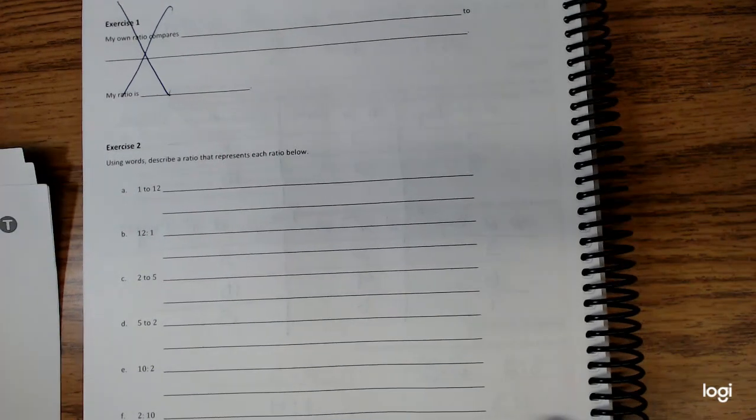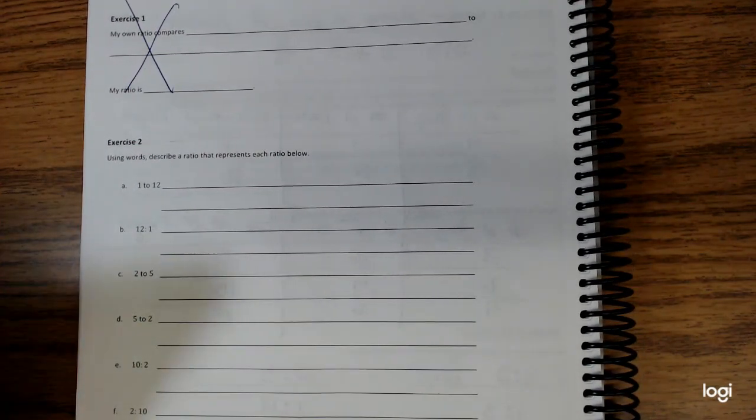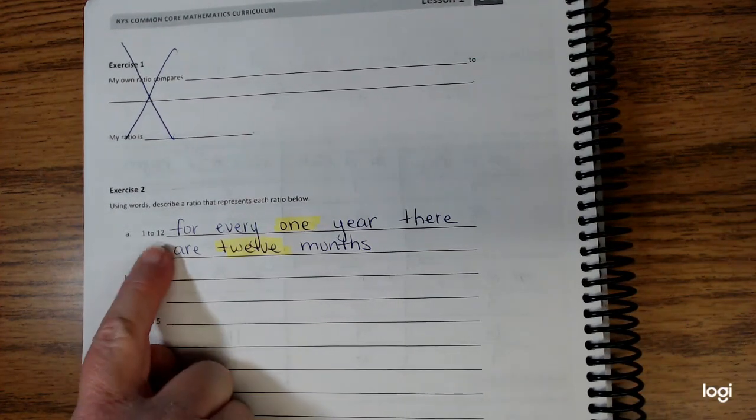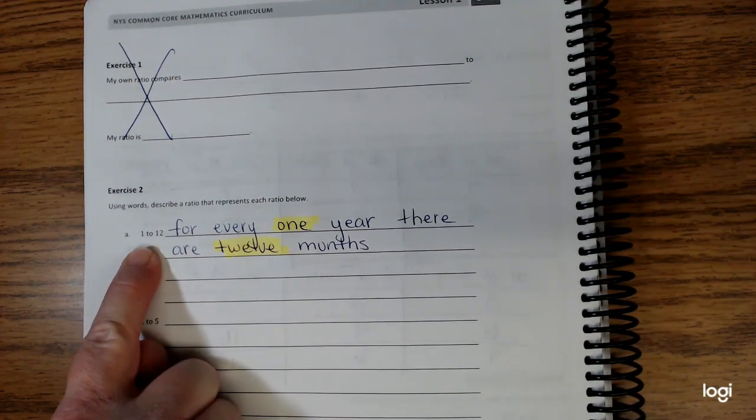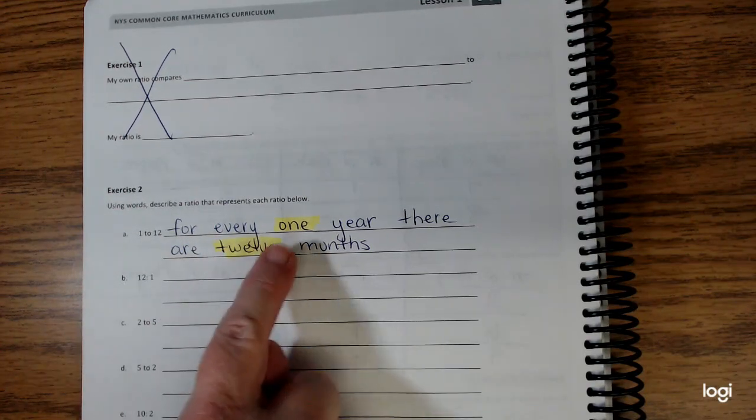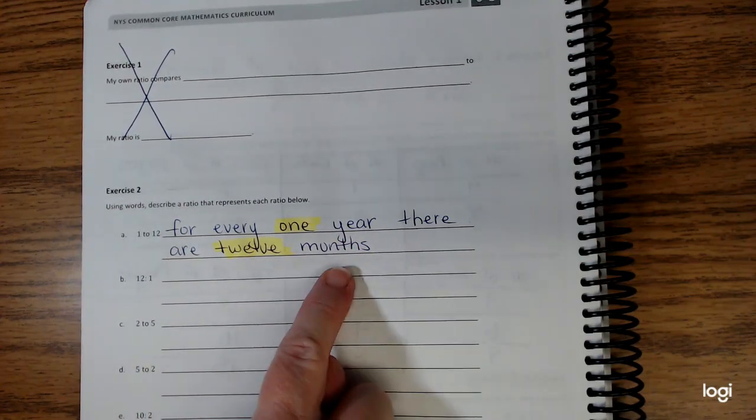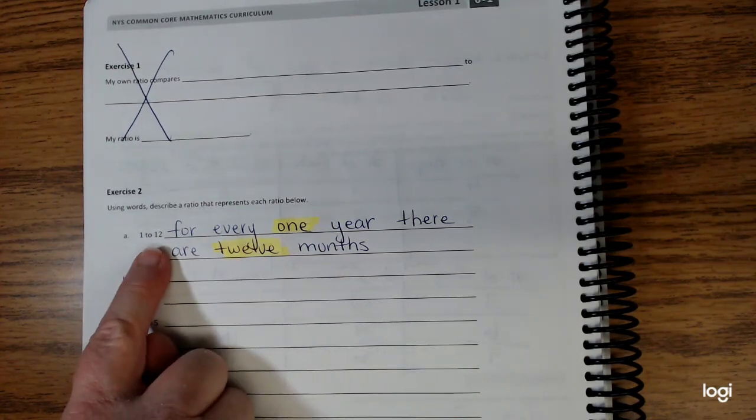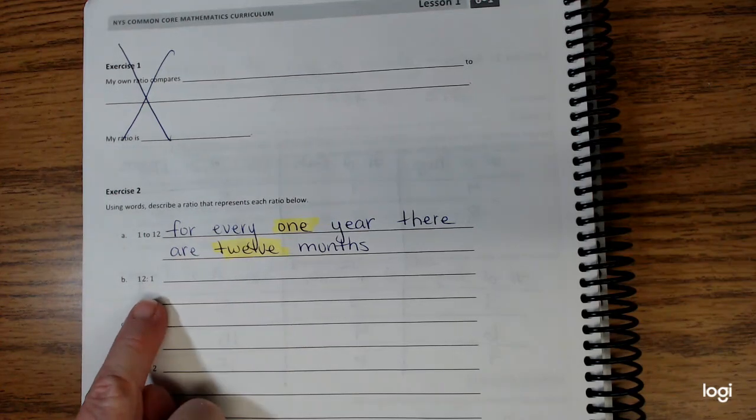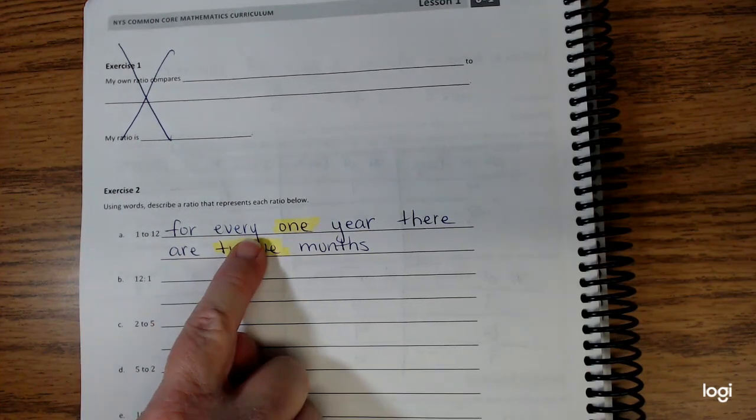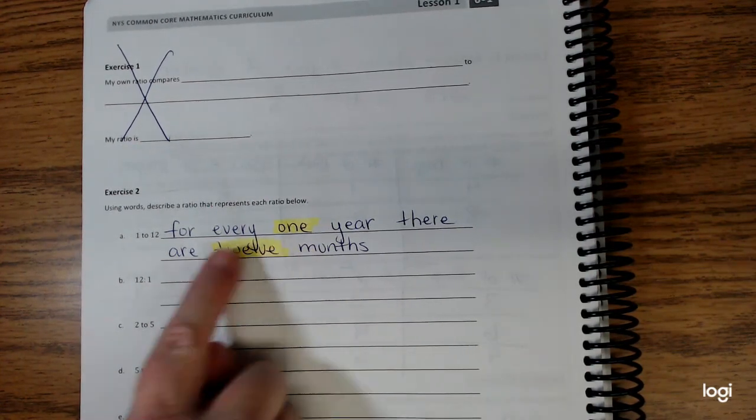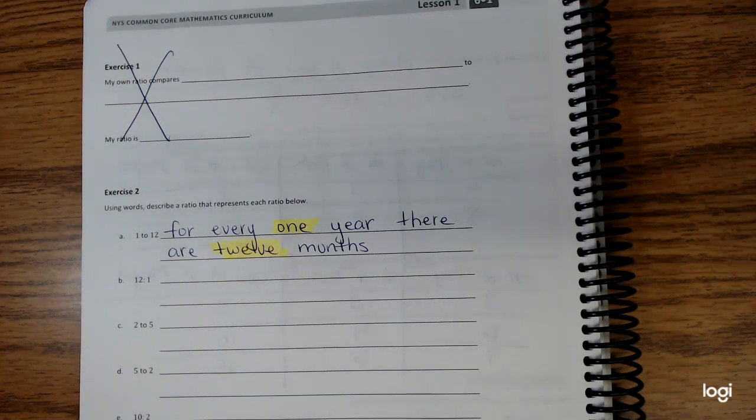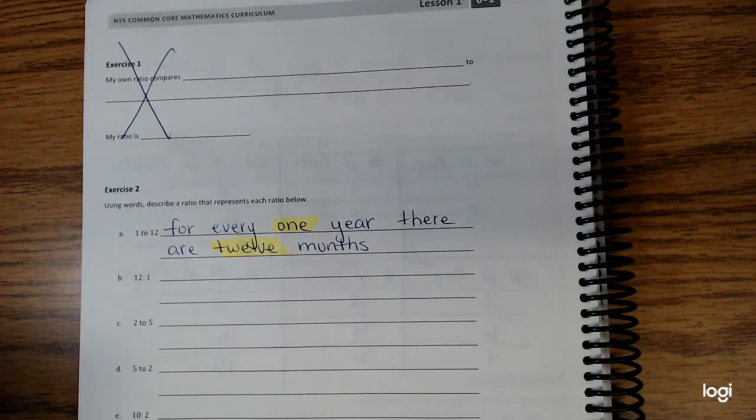We're going to write a situation that represents 1 to 12. For example, the ratio I have is 1 to 12. My story is for every one year, there are twelve months. I have one and twelve in the correct order. I could not write this situation for B. I could not say the exact same story. Why? Because twelve is listed first and I had one listed first. Go ahead and write down my example.